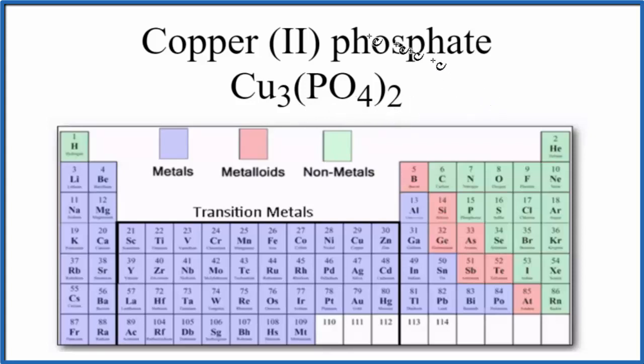The short answer is that the entire compound is an ionic compound. But within this compound, we have this phosphate ion. And the bonds between the phosphorus and the oxygens in the phosphate ion, those will be covalent.